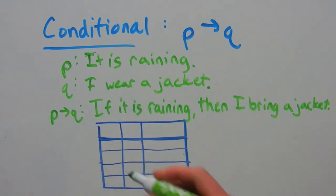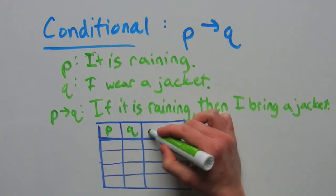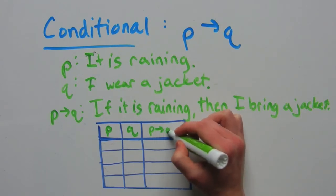So for our truth table, we're going to have P, Q, and then P implies Q.